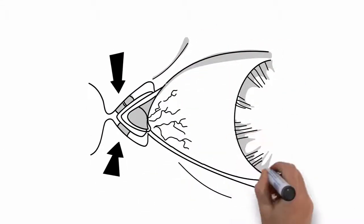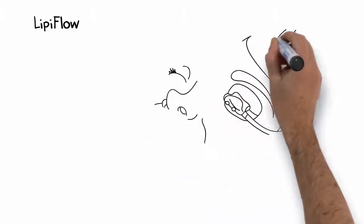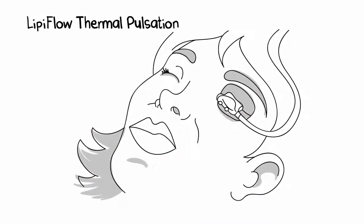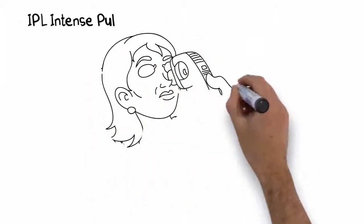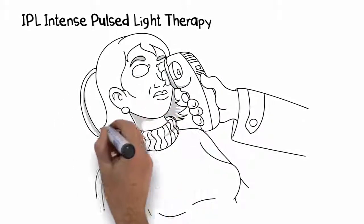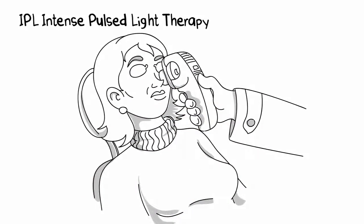If the oil glands in your eyelids are clogged, they can be reopened using treatments such as LipiFlow and IPL (intense pulsed light therapy). These treatments combine gentle heat and massage to get oil flowing again.